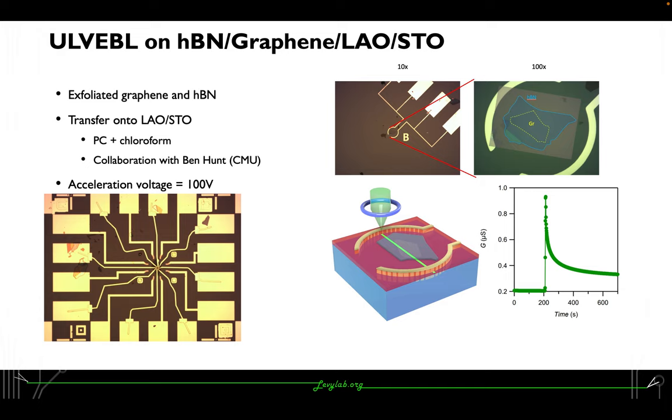Moreover, not only a single layer graphene, we also tried the graphene with boron nitride on top to give better graphene quality.